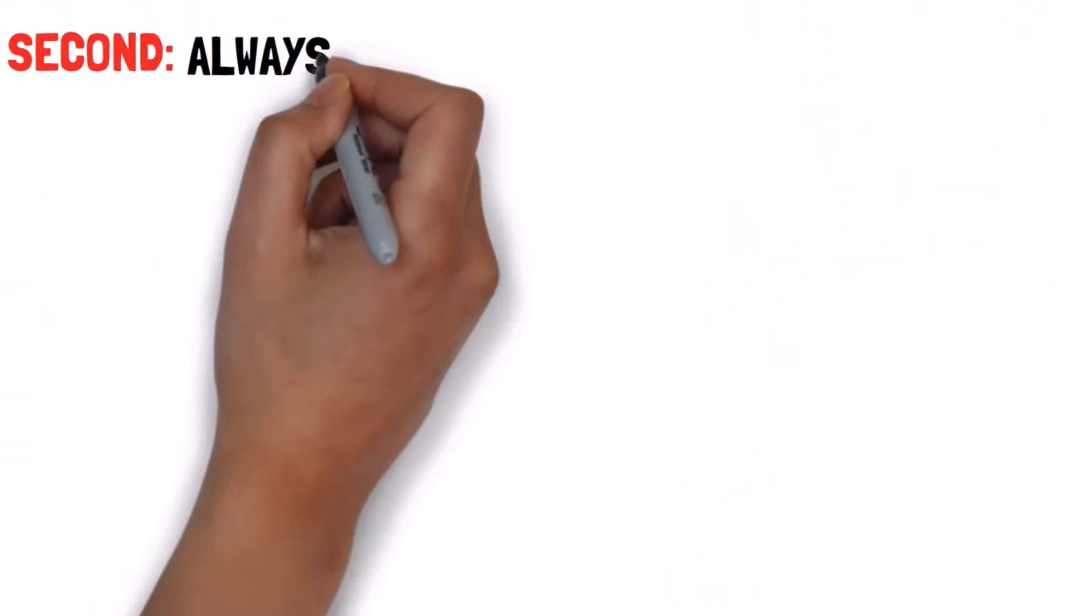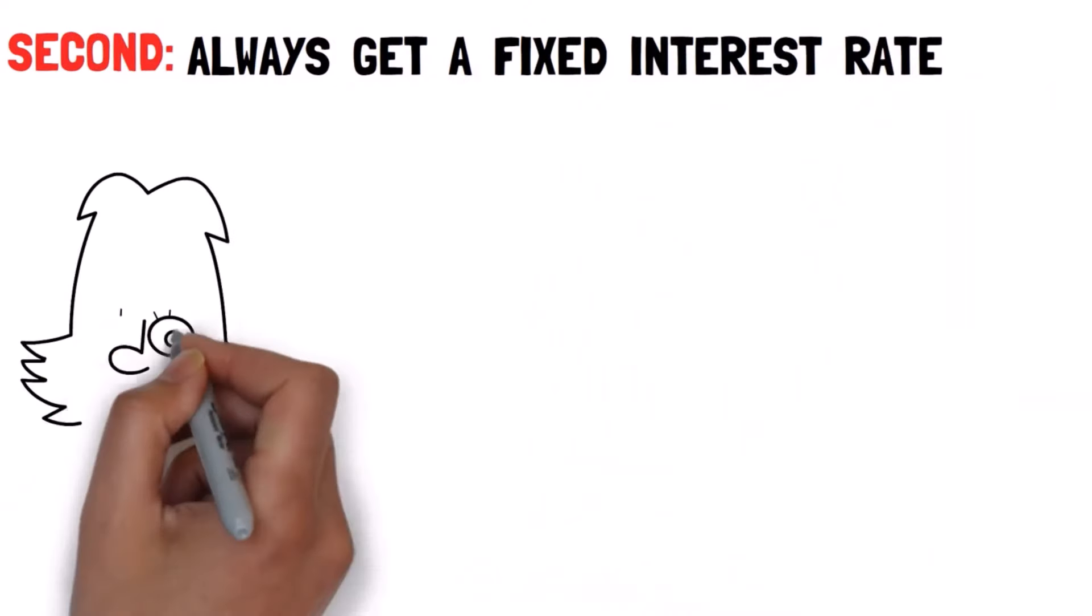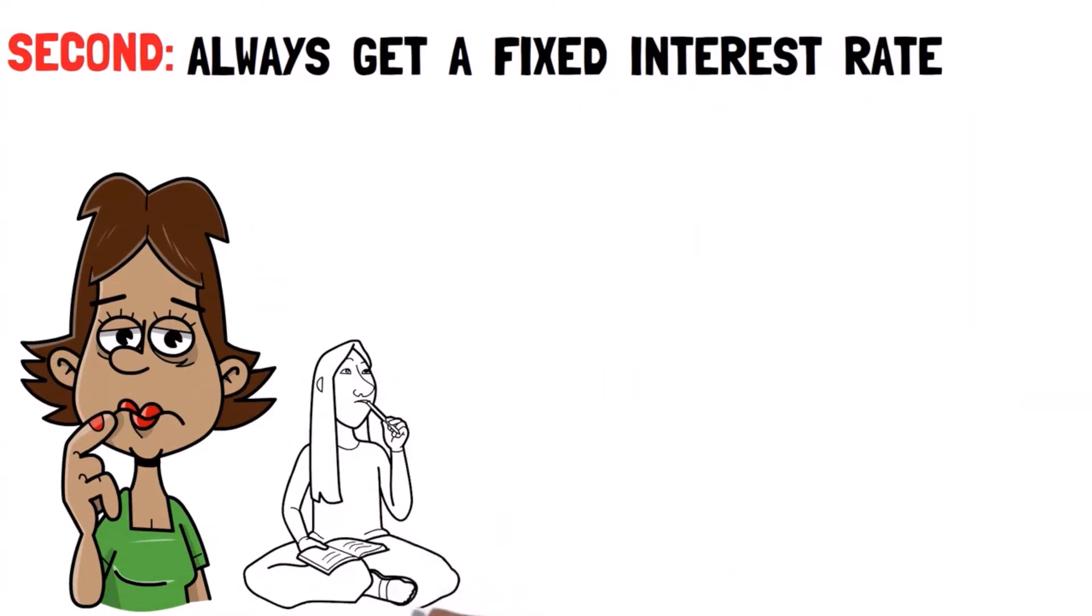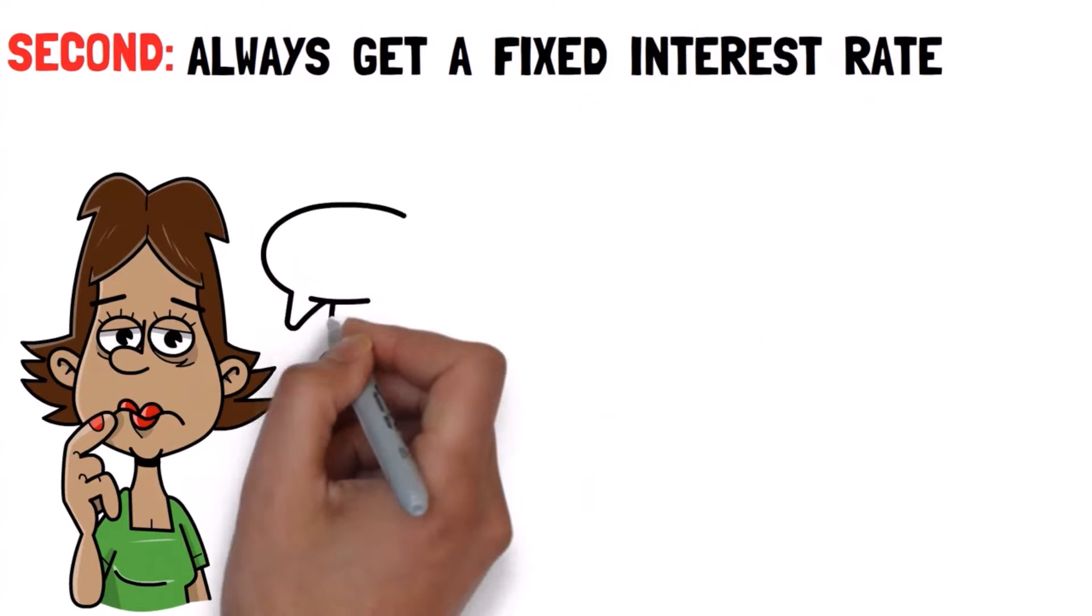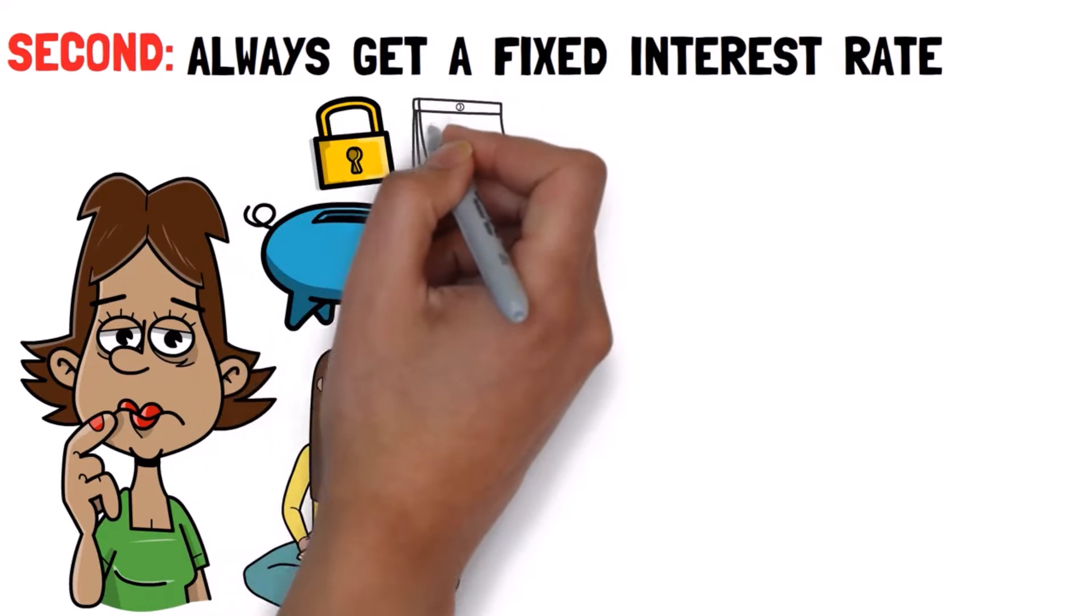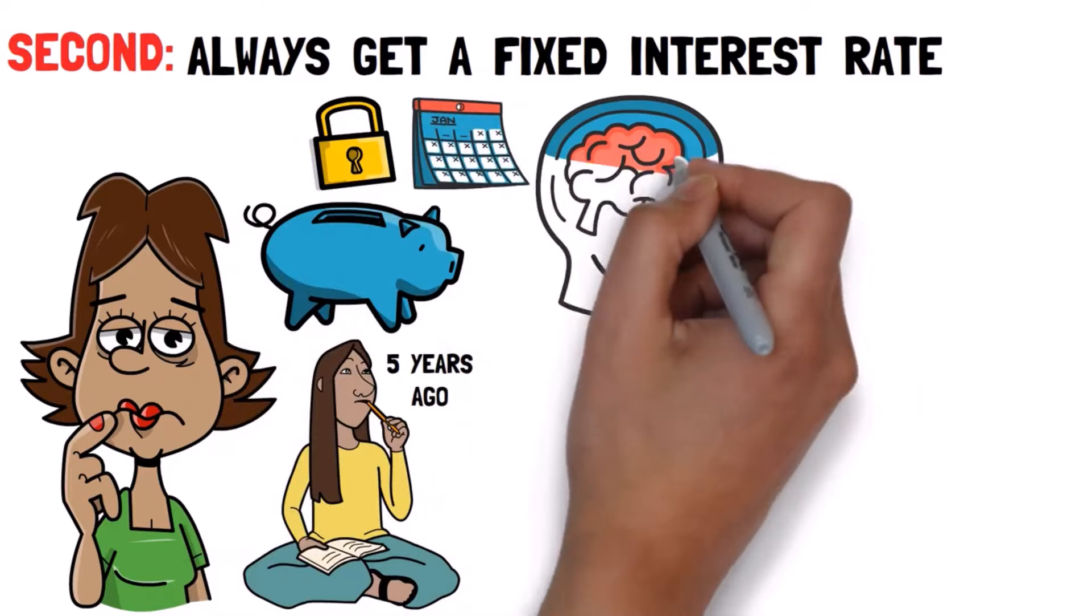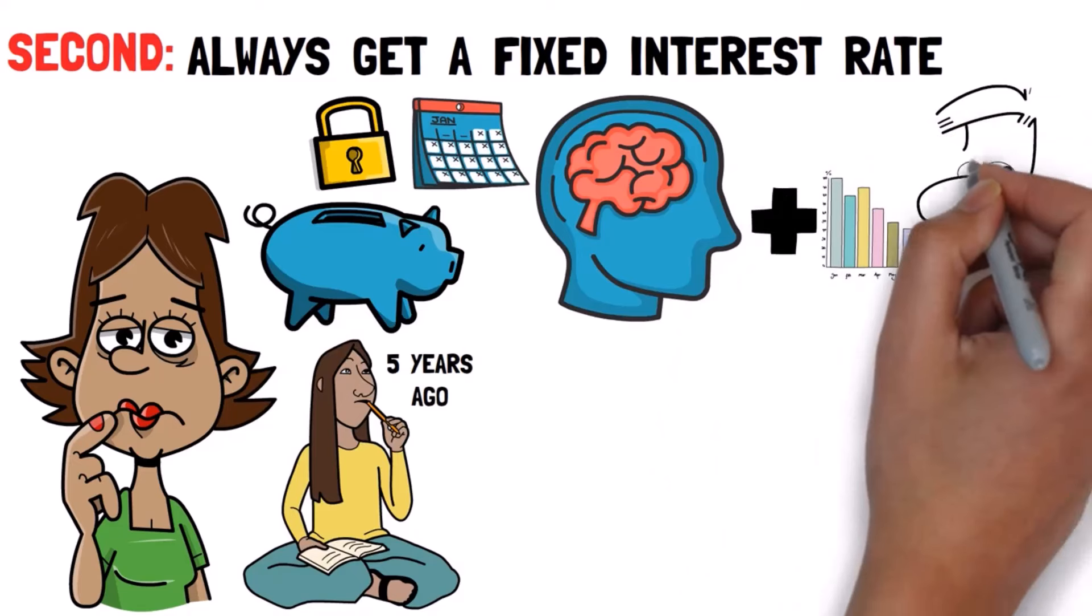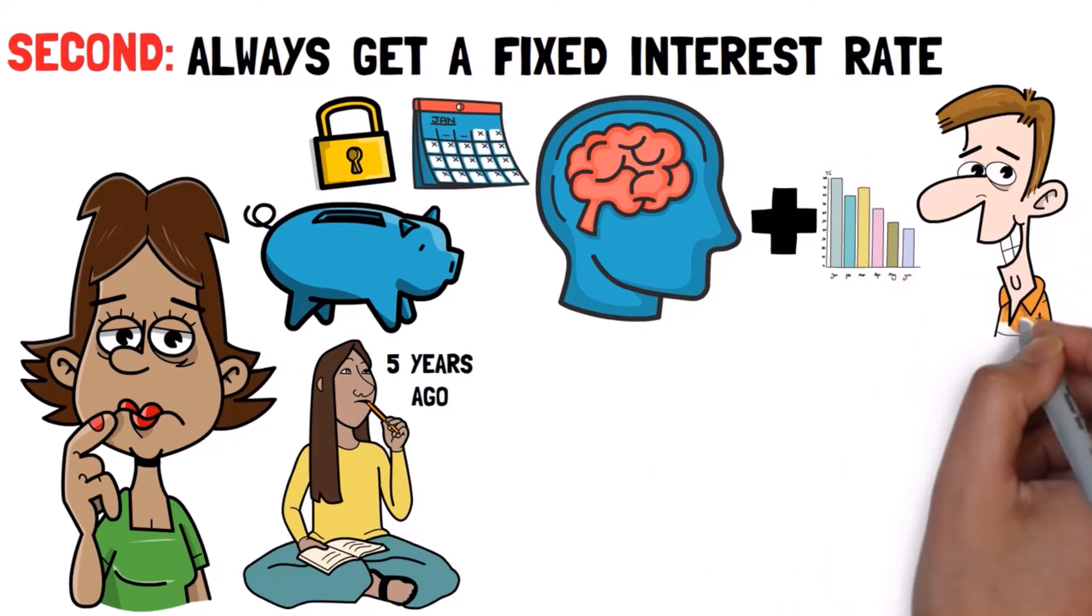Second, always get a fixed interest rate. Look, the entire economy is uncertain. You could have never predicted we would be here today five years ago. That's why it makes sense to lock in a fixed payment every single month until your loan is paid off, just for the peace of mind. Plus, if rates wind up declining like everybody expects, then you could move on to third, refinance.